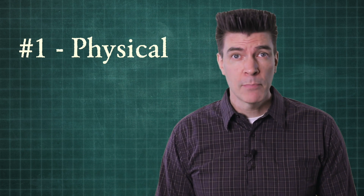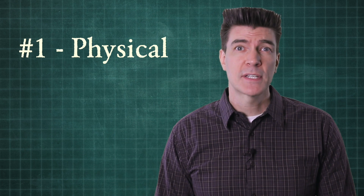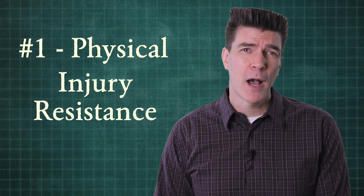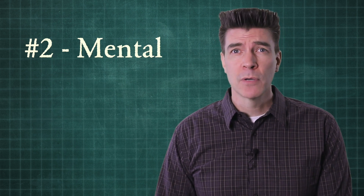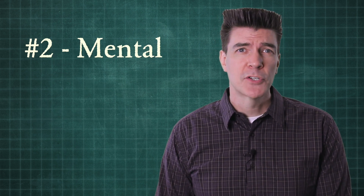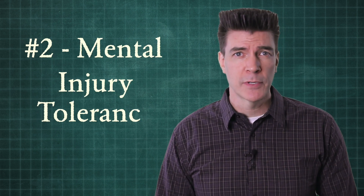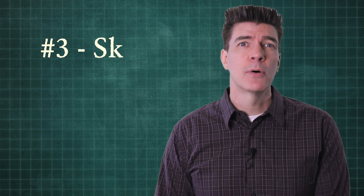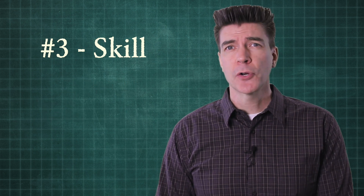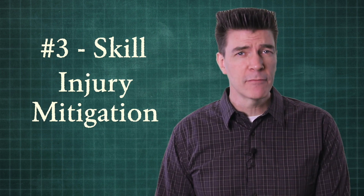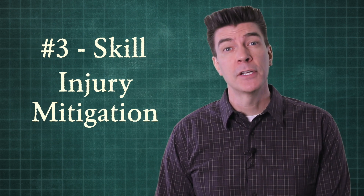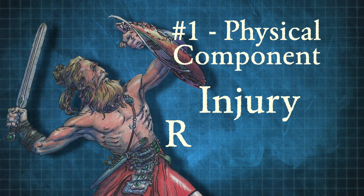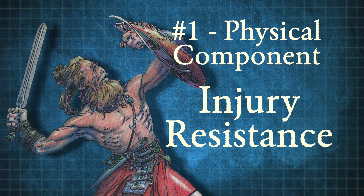The physical component, which is how resistant your body is to injury. The mental component, which is your mental tolerance for injury. And the skill component, which is your capacity to reduce the destructive effect of an incoming blow. Today, we'll focus on the body's physical capacity to resist injury.